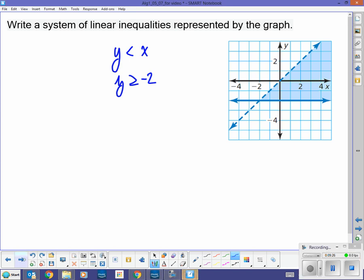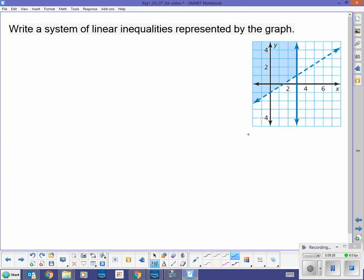Okay. Another example. Write a system represented by this graph. Well, let's do the vertical line first. This is X equals 3. But, since this is an inequality, I'm shaded to the left of it. So, for my X values, this would be X is less than or equal to 3.